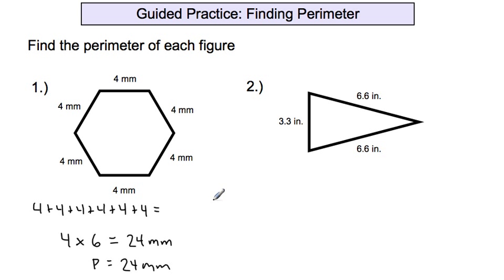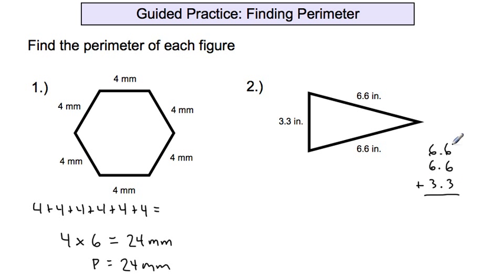On the next one, we can't use multiplication because not all of the sides are the same length. The sides are 3.3, 6.6, and 6.6 inches. There are three sides, so I add up three things: 6.6 plus 6.6 plus 3.3. Six plus six plus three is 15, and then the tenths: six plus six plus three gives 16.5. Don't forget the decimal. The perimeter equals 16.5 inches.